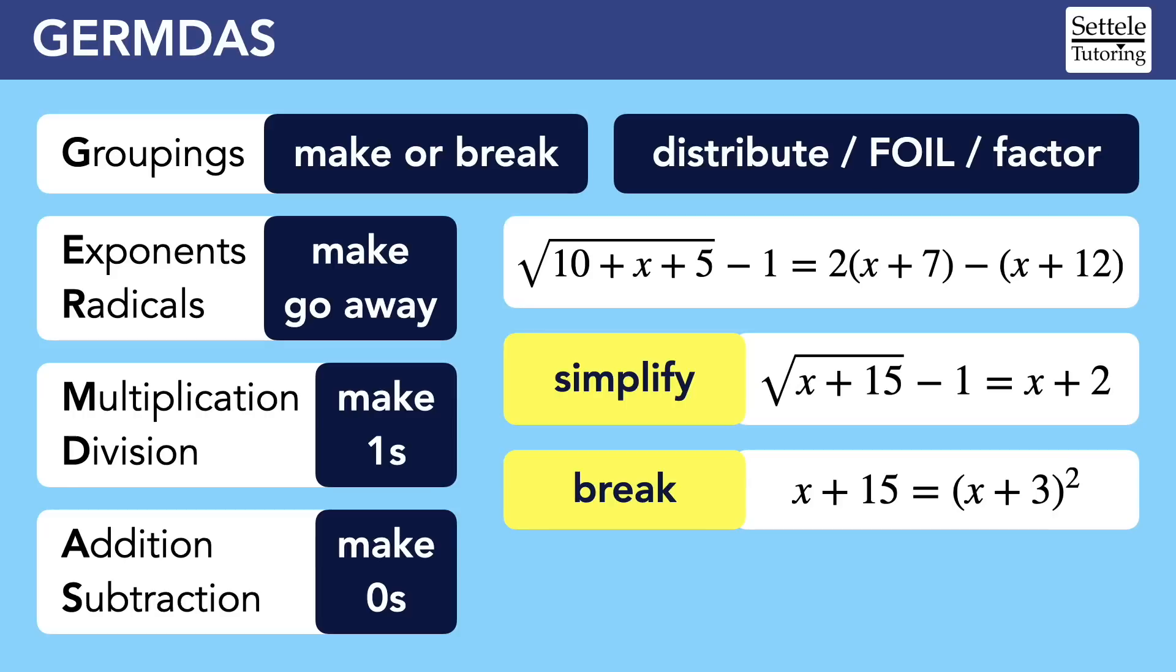We'll then work through GERMDAS backwards using algebra to move terms across the equal sign. Eventually, we'll get to a point where we want to make groupings by factoring to solve the quadratic equation. If this is confusing, don't worry. GERMDAS is going to help you work your way up to this level of algebra.